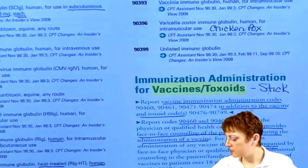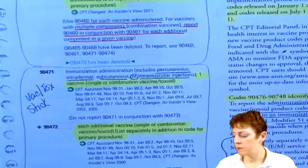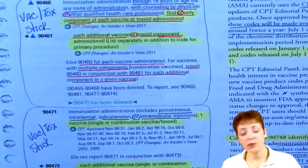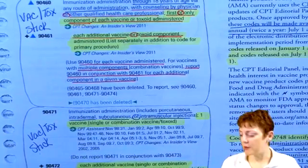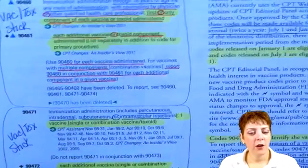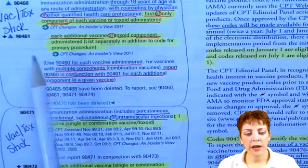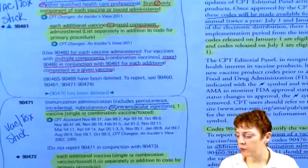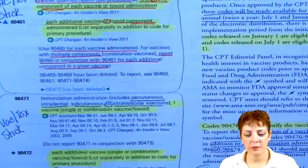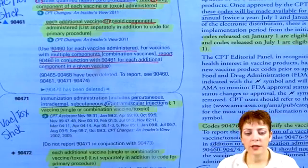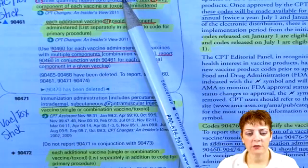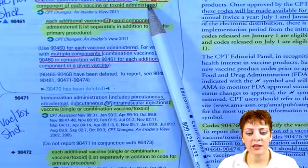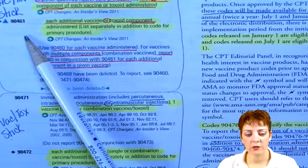Looking at page 459 with bubbling and highlighting — 90460, which I've labeled 'vaccine toxoid stick.' I did the same for 90471 and 90472. The difference: 90460 is through 18 years of age, via any route of administration, with counseling — this is the first or only component of each vaccine or toxoid administered. Then 90461 is each additional component.